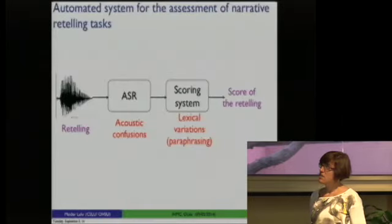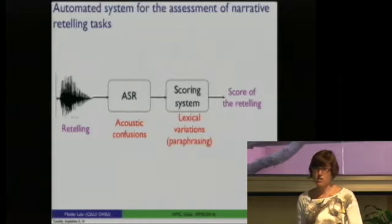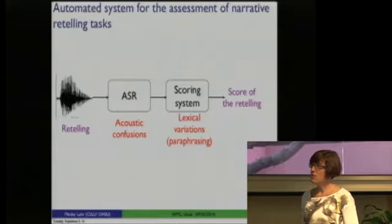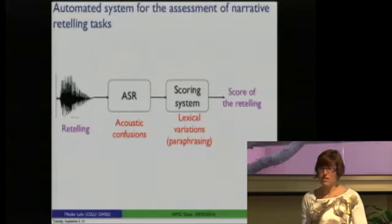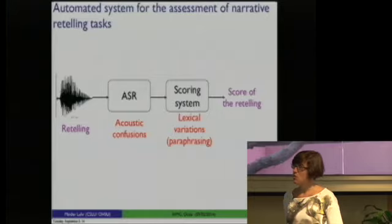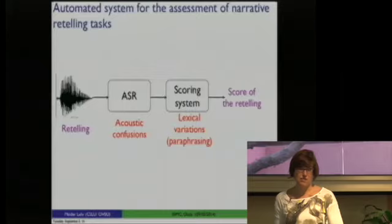An automated system will have the following modules. First, at the front end we have the speech recognizer, which takes the narrative retelling and outputs noisy transcripts of the retelling. This transcript is then fed into the scoring system. The scoring system assigns a score to the retelling according to the guidelines of the test. The scoring system must capture the acoustic confusions from the speech recognizer and also the lexical variations or paraphrasing from the narrative retelling.